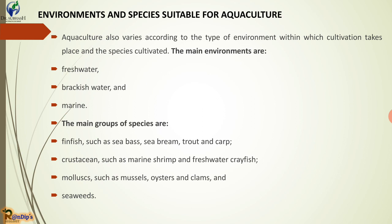Now, environments and species suitable for aquaculture. Aquaculture also varies according to the type of environment within which cultivation takes place and the species cultivated. The main environments are fresh water, brackish water, and marine water. Fresh water means rivers and inland waters. The main groups of species are fin fish such as sea bass, sea bream, trout, and carp.